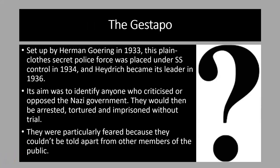The Gestapo was Hitler's plain-clothes secret police force. They were set up in 1933 by Hermann Goering, who at that time was chief of the ordinary police. In 1934, the Gestapo was placed under SS control, and in 1936 Heydrich, who was also the leader of the SD, was put in charge of the Gestapo as well. So from 1936, Hitler had created a unified police and security force, with the SS, the SD and the Gestapo working in parallel.